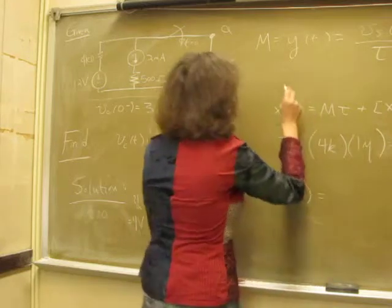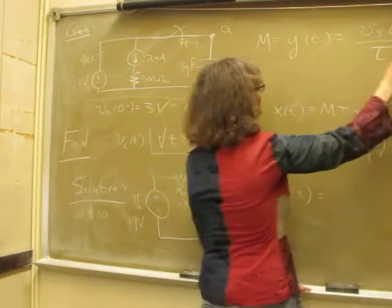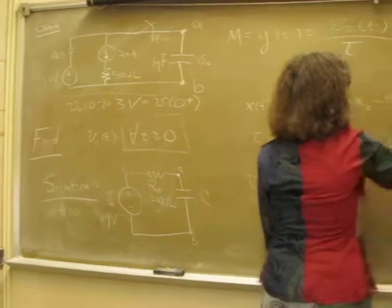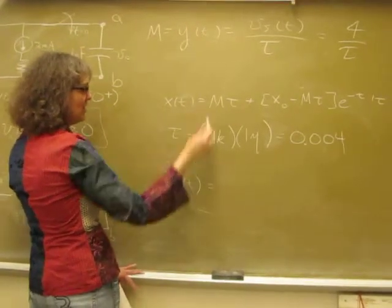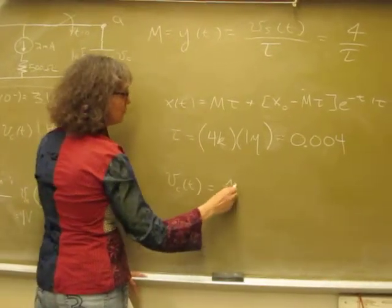What we've actually got is M equals 4 over τ, and when you plug it into this equation, you end up with just 4 volts.